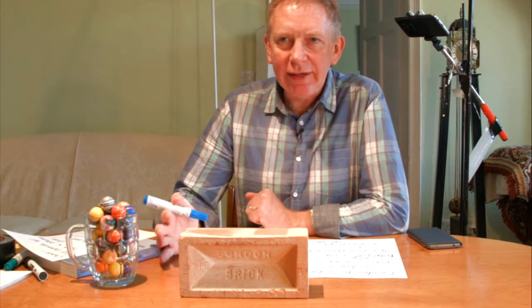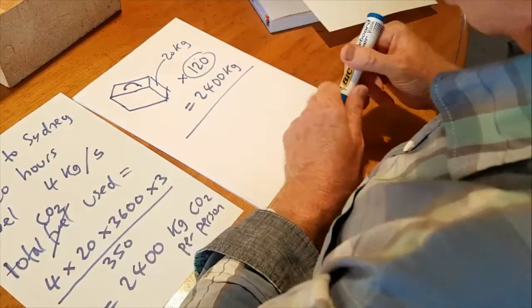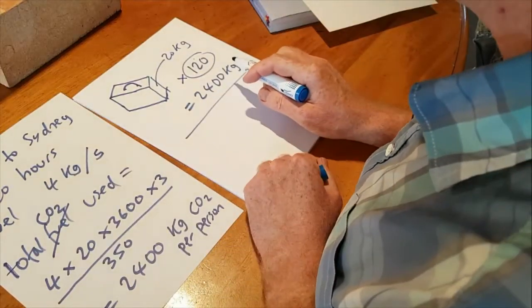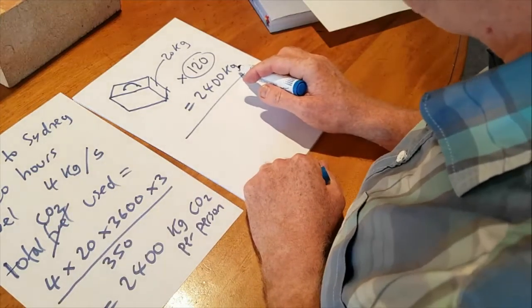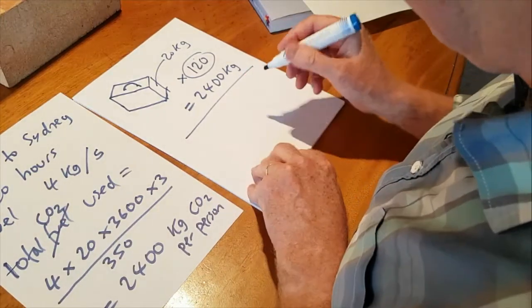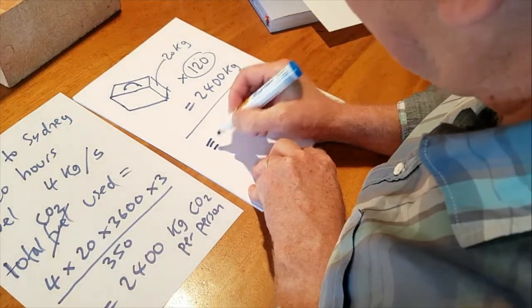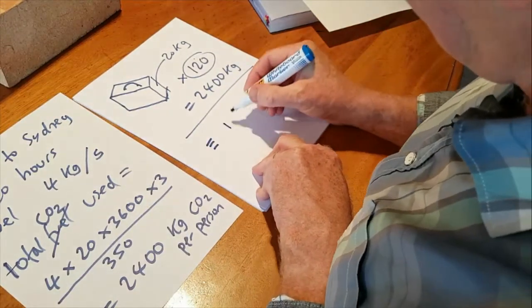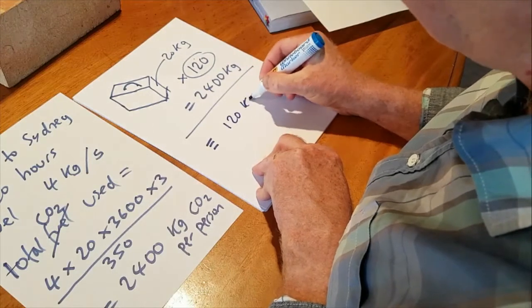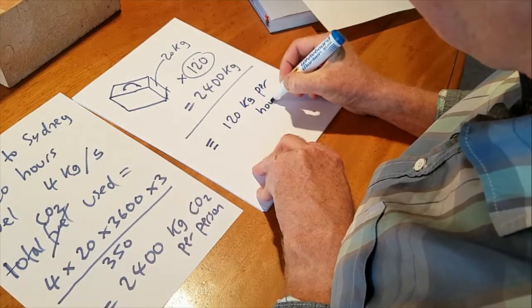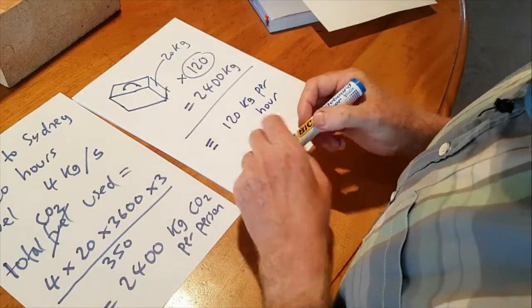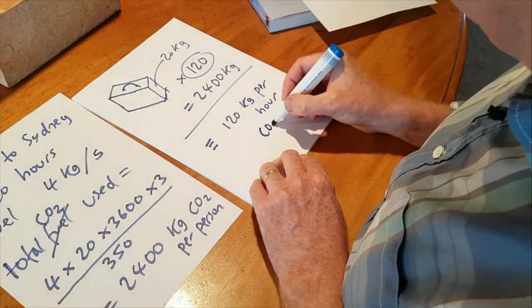Another way of looking at this: the 2,400 kilograms of CO2 you've emitted has been generated over 20 hours. So divide by 20 — that's about 120 kilograms per hour. That means that when you're sitting in the plane, every hour you are generating 120 kilograms of CO2. That's one and a half times my body weight.